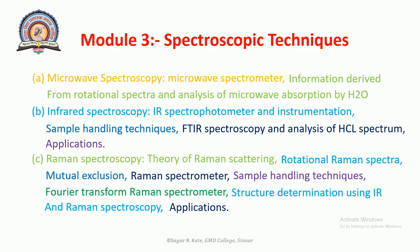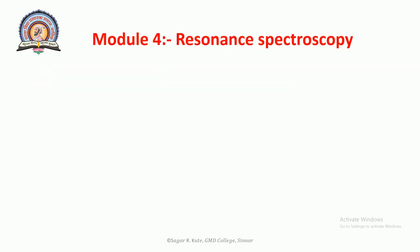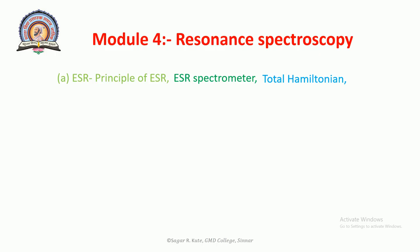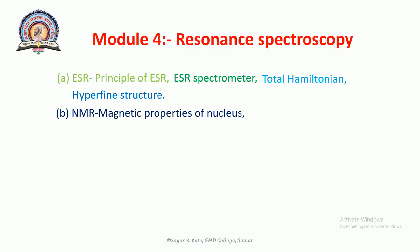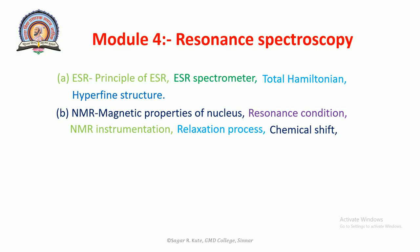The last module is Resonance Spectroscopy. In Resonance Spectroscopy there are two parts. First is ESR: Principle of ESR, ESR Spectrometer, Total Hamiltonian, and Hyperfine Structure. Second is NMR: Magnetic Properties of the Nucleus, Resonance Condition, NMR Instrumentation, Relaxation Process, Chemical Shift, and Applications of NMR. So in the fourth module we have ESR and NMR techniques. This completes the syllabus of Atoms and Molecules.